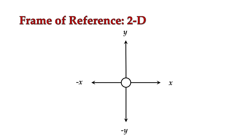And again, any direction that was positive, the opposite one would be negative. So we had our positive x and we had our negative x. We had our positive y and we had our negative y.